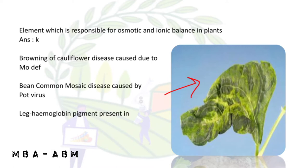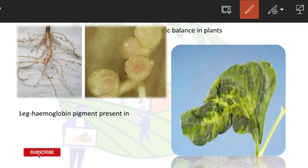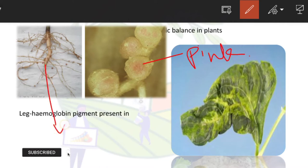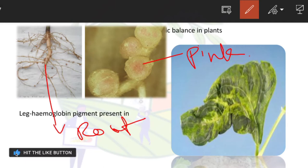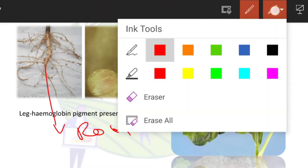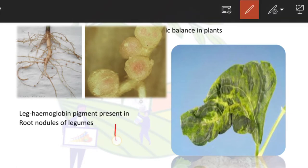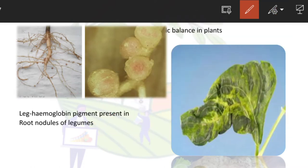Leghemoglobin pigment — you can see here it is pink in color, present in pink nodules — is present in root nodules of legumes. The answer is root nodules of legumes. Remember: 'leg' for leghemoglobin and legumes.